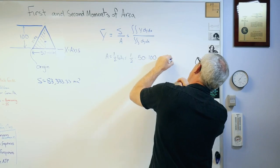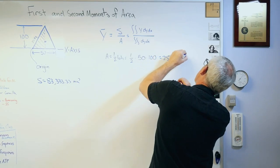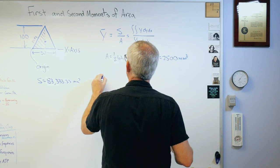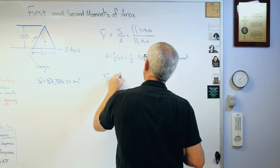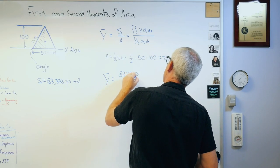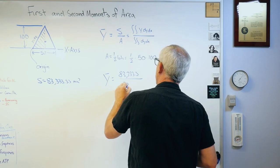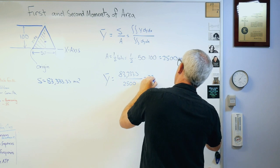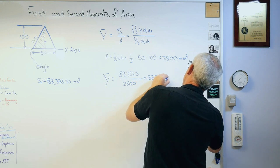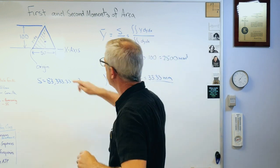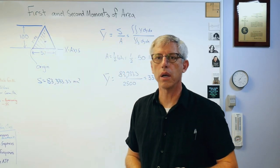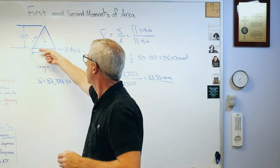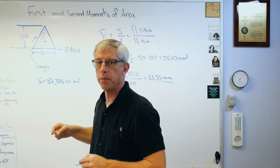That's one half, the base of my triangle is 50, and the height is 100. And that gives me an area of 2500 square millimeters. Well, y bar must then be 83333.3 over 2500, and that's going to give me 33.33 millimeters. Is that right?